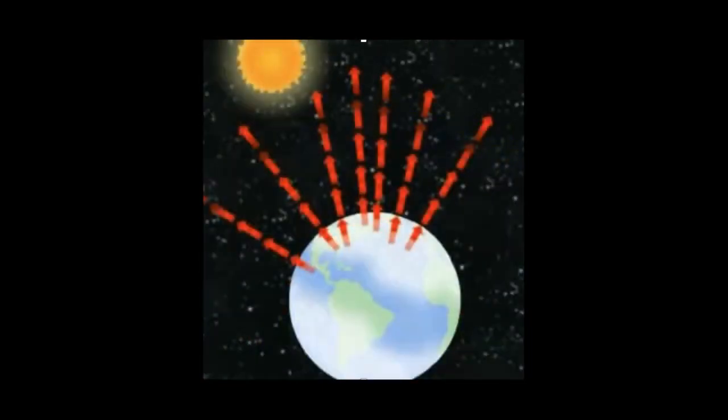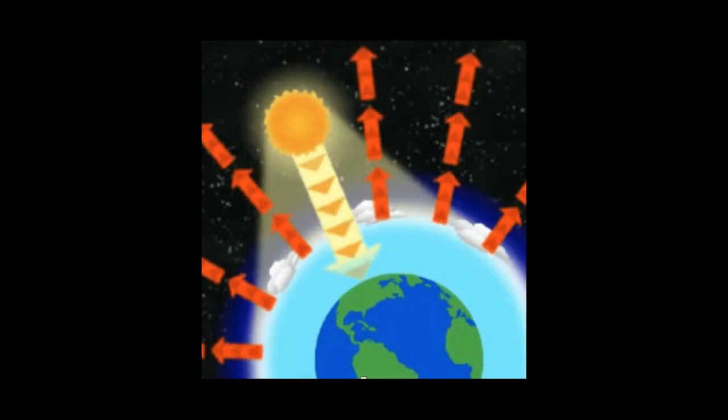Without an atmosphere, the surface of the Earth would be about 30 degrees Celsius cooler than it is now. Because the Earth is in radiative equilibrium, we know that the planet emits enough long-wave radiation into space to equal the incoming short-wave radiation from the Sun.